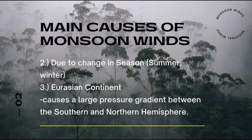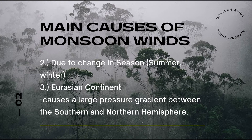The second main cause of monsoon winds is due to change in season — which is summer, or the dry monsoon — and winter, which is the wet monsoon. The third main cause is the Eurasian continent. They cause a large pressure gradient between the Southern and Northern Hemisphere and play an important role in how a monsoon occurs.